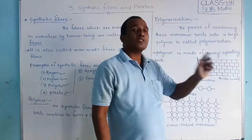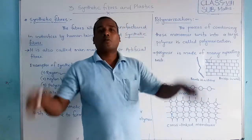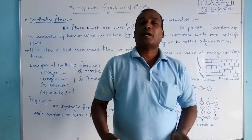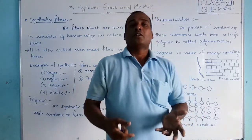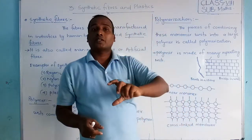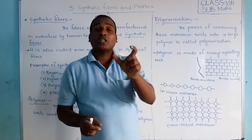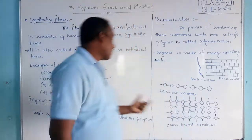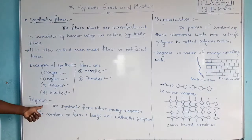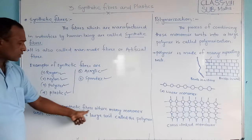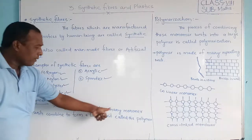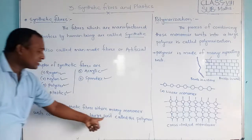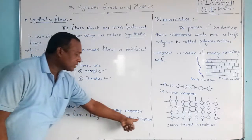One brick is the small unit of a wall. Same like that, when we make synthetic fibers, they are made of small small units called monomers or polymers. The synthetic fibers are where many monomer units combine to form a large unit called a polymer.